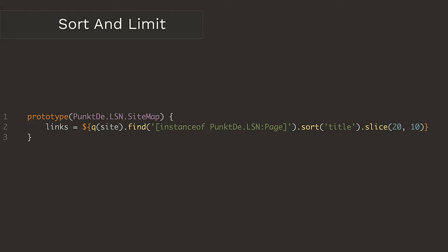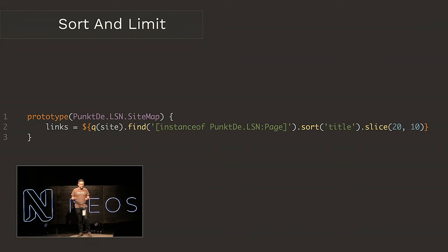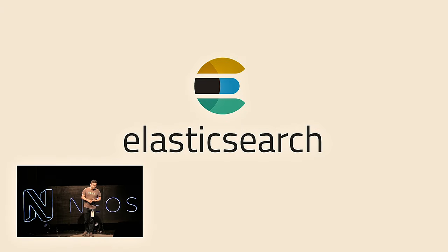And also this one — it looks pretty much like MySQL: find something, sort it, and slice or limit it. But only the first part is done in the database; everything else is done in memory. So if you have lots of pages, you cannot use that method because every time you select everything and then throw most of it away. And there is no good way to do that with Flow Query at the moment.